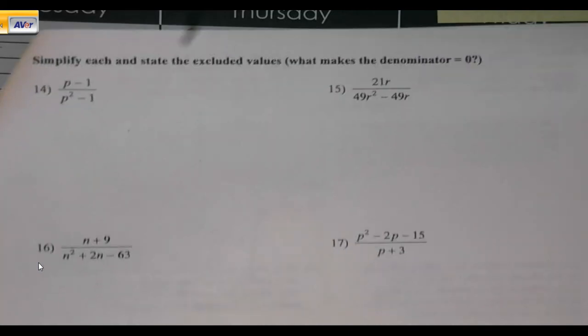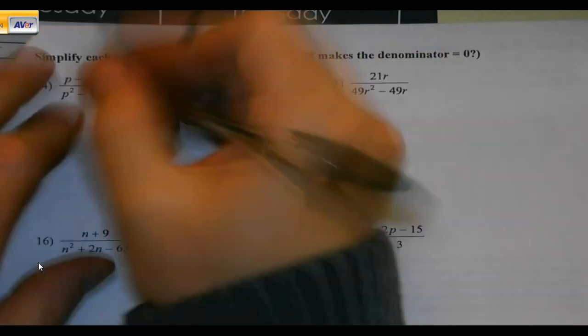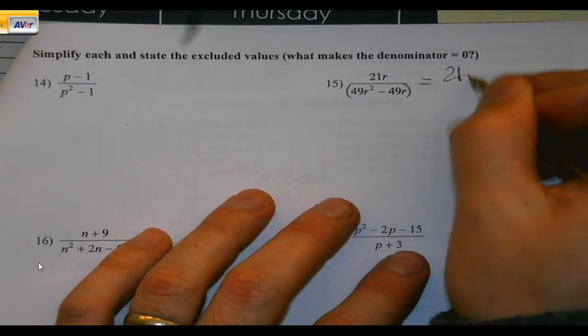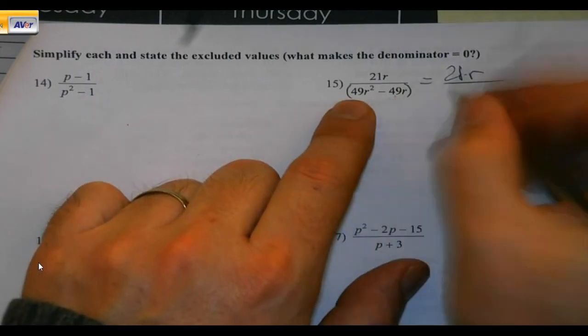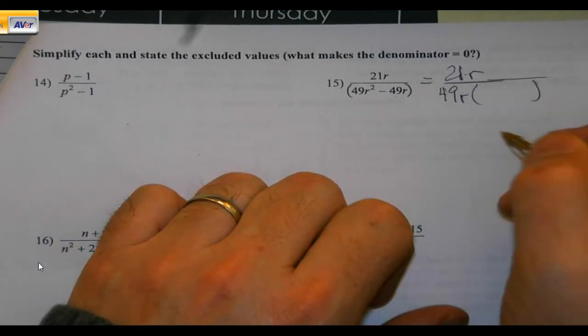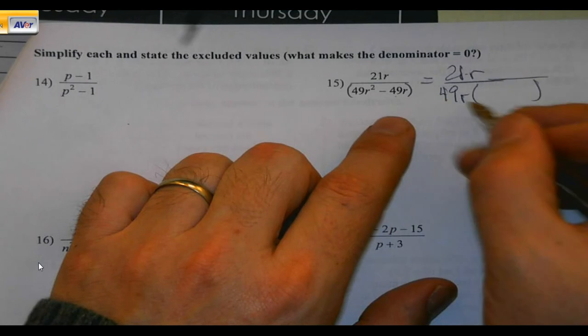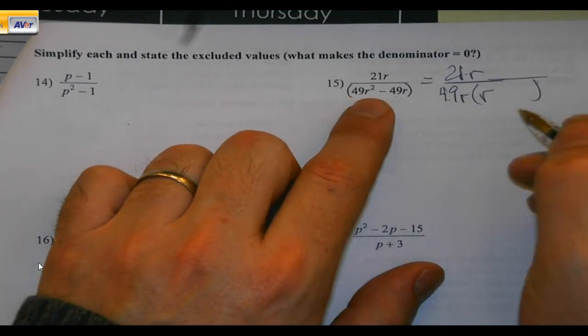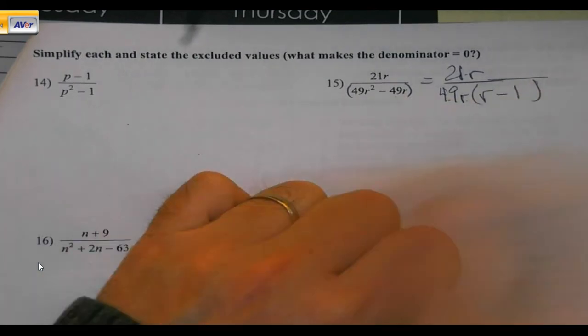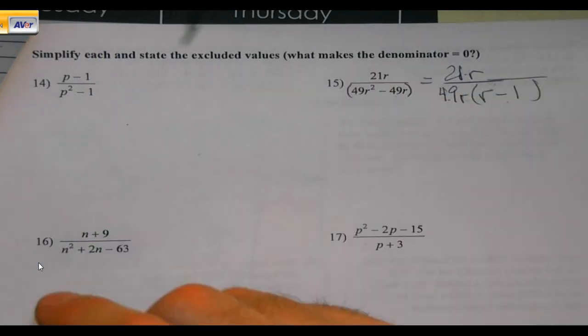Simplify each and state the excluded values. What makes the denominator equal zero? A couple things here at the start on this one. 21R stays the same. What do they have in common? They're both divisible by 49. They both have an R. Don't look at this and go, different squares. If it was just 49, yes. But, it's not. Without a square, that is not a difference of squares. Do not factor that.